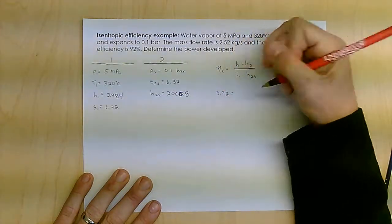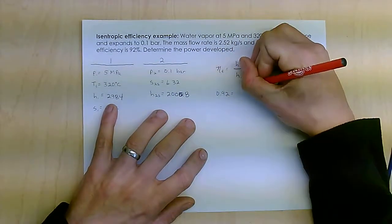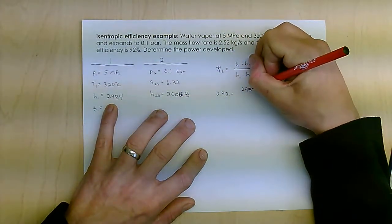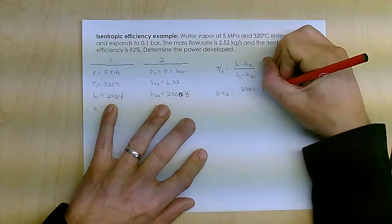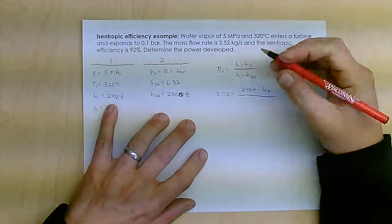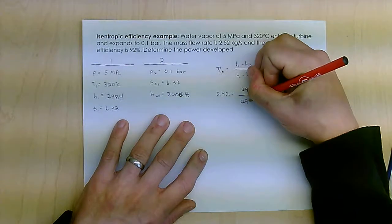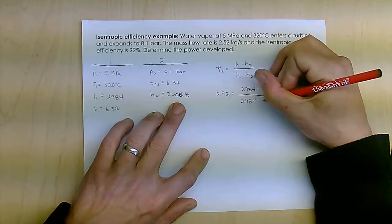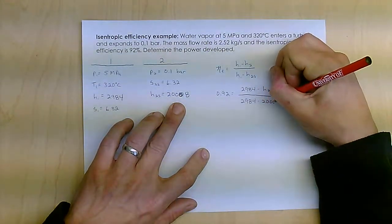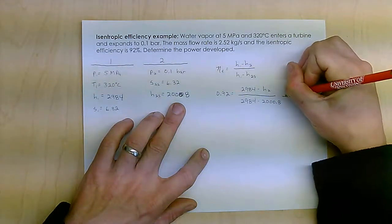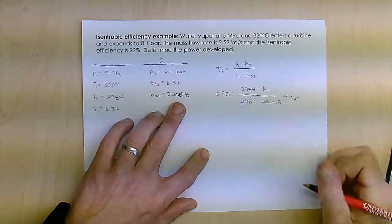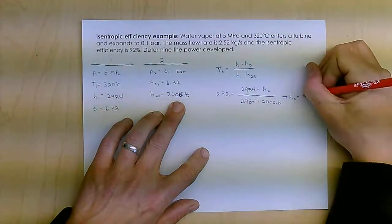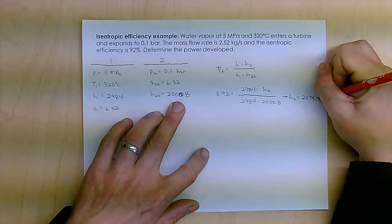So I just plug in 92%. I plug in what I know about H1, 2984 minus H2, which is what I'm looking for, that's the actual H2, divided by 2984 minus the best-case H2. And from that, I find that H2 actually equals 2079.5.